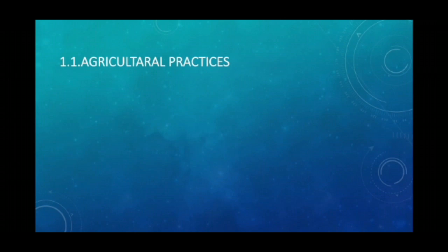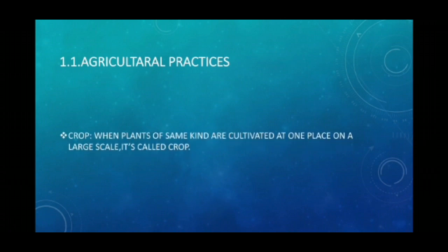We start with agricultural practices and the first definition, which is crop. When plants of the same kind are cultivated at one place on a large scale, it is called a crop. If I say a wheat field or a rice field, in that field there will be only rice or only wheat grown in that area, and that is when we say this is a rice crop or a wheat crop.